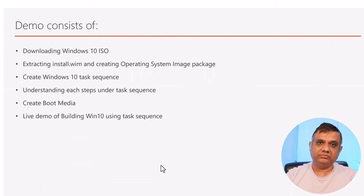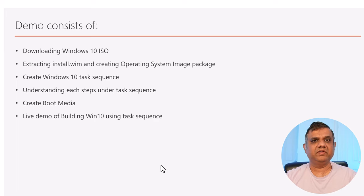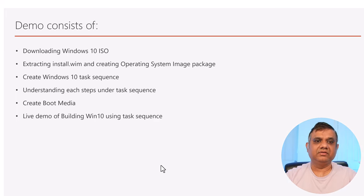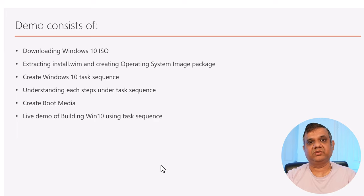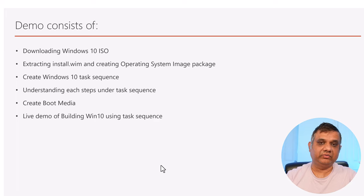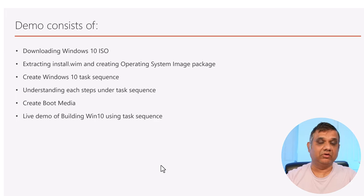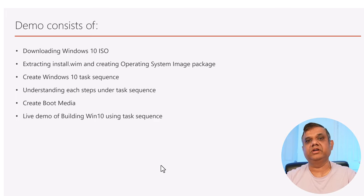In my demo I'll show you how to download the Windows 10 ISO from Visual Studio subscription. From that ISO I'll extract install.wim and create an operating system image package on the SCCM console. Then I'll create the Windows 10 task sequence, go through each step to explain what it means, create the boot media to boot the device, and finally give you a live demo of the task sequence running.